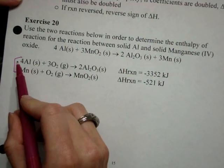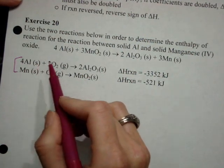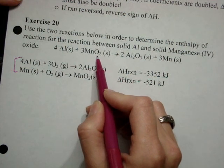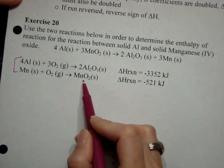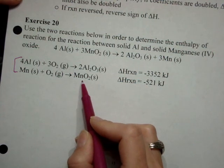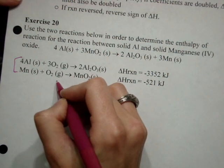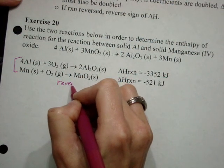Then I see that I have 3 MnO2. I see MnO2 in my second equation, but I see it as a product and I only see one mole of it. So what I need to do to this equation is I need to reverse its direction and multiply it by three.